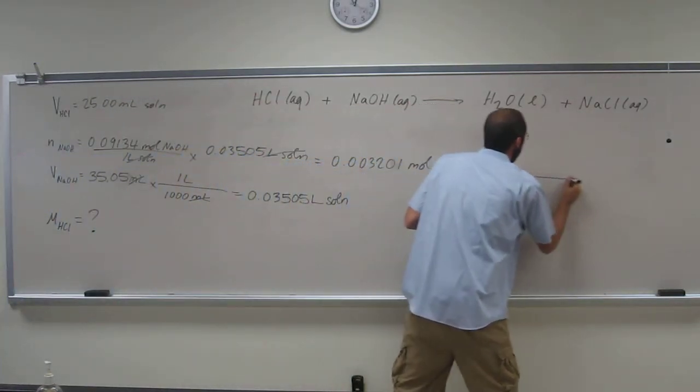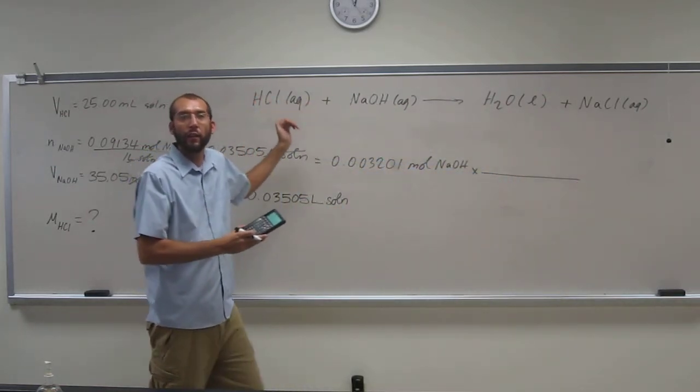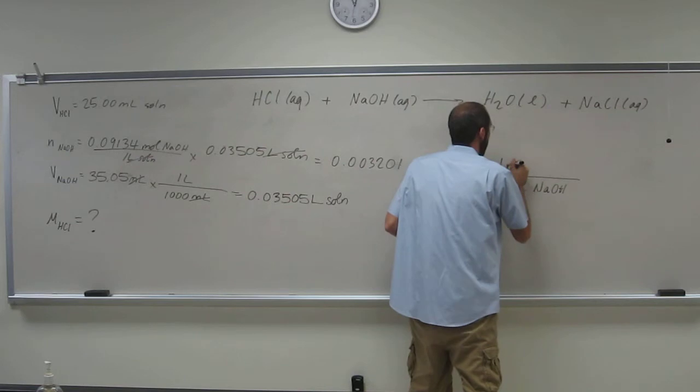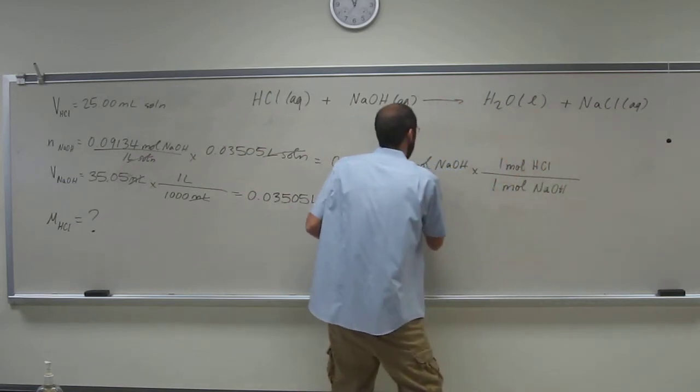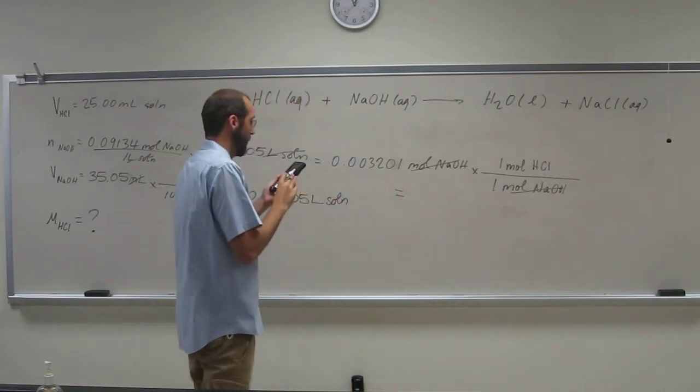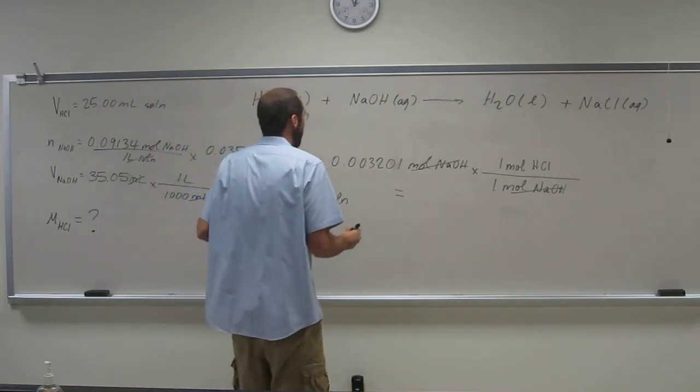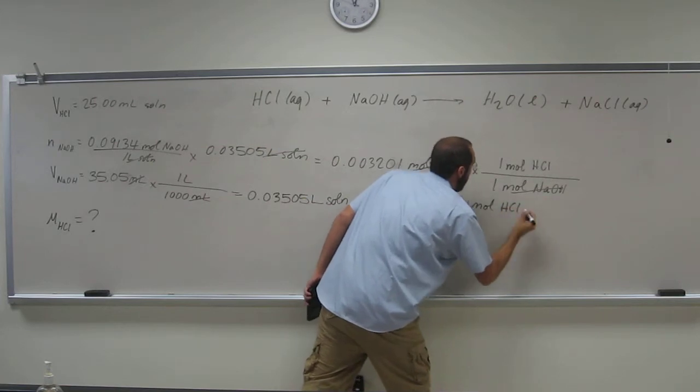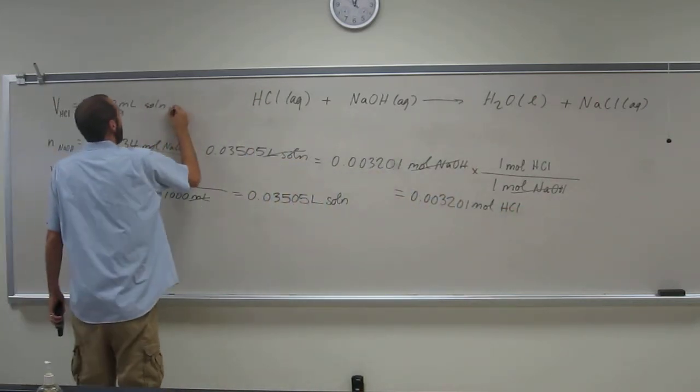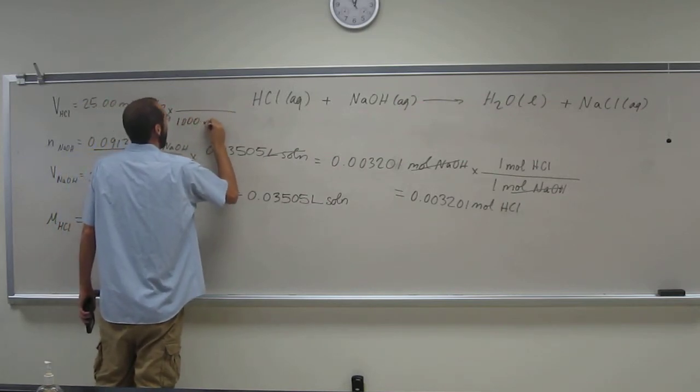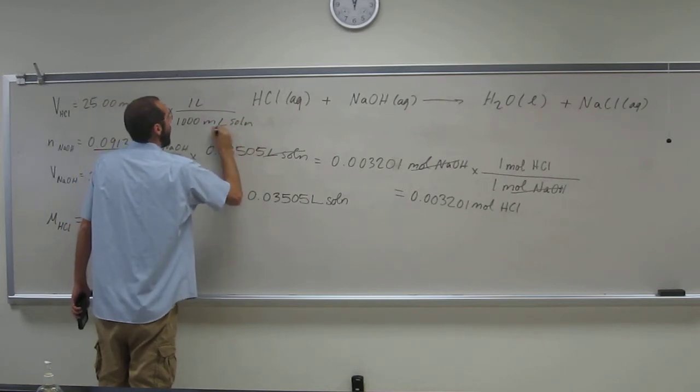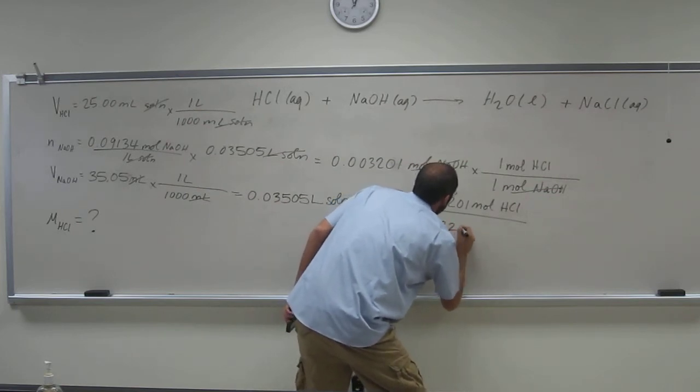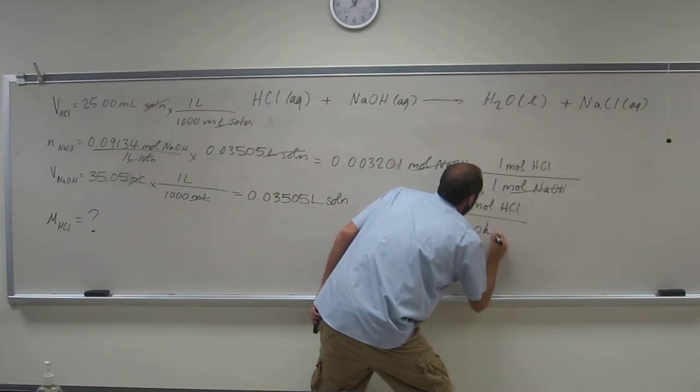Then what do we know about moles to moles of NaOH to HCl, right? So it's a one to one. One mole NaOH, one mole HCl. So that will give us the number of moles of HCl. Well, same number of moles. And do we know how many liters of solution we got? Yeah. So take this divided by 0.02500 liters of solution.